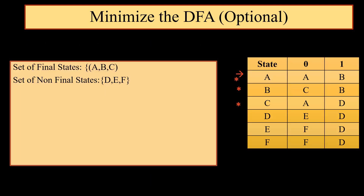If we want, we can minimize the DFA. This is an optional step but we can always consider it. In order to minimize the DFA, we divide the entire DFA into 2 sets: the set of final states and the set of non-final states. Since we have 3 final states — A, B, C — they come under one category, and we have 3 non-final states — D, E, F — they come into another category.